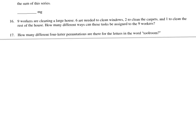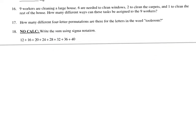Next, once again permutations with repeaters. Order matters, but we need to account for repeating letters. We have 8 letters in total, but 4 of them are O's. No other repeating letters. So the setup is 8 factorial over 4 factorial.